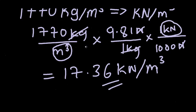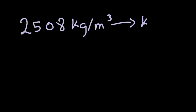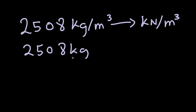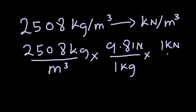Now let's do another example. Let's say that we have 2508 kilogram per cubic meters and we want to convert it to kilonewton per cubic meters. First, we're going to express it in this form, making the cubic meters unit the denominator. Now we're going to multiply by 9.81 Newtons over 1 kg, and also multiply by 1 kilonewton over a thousand Newtons.